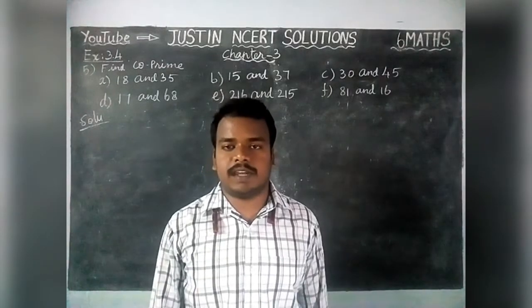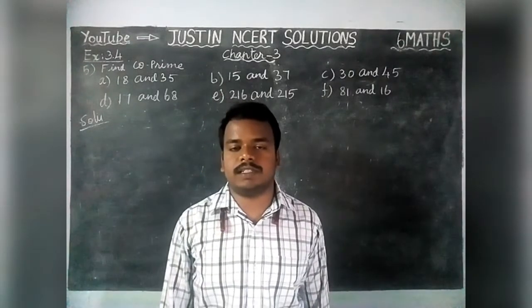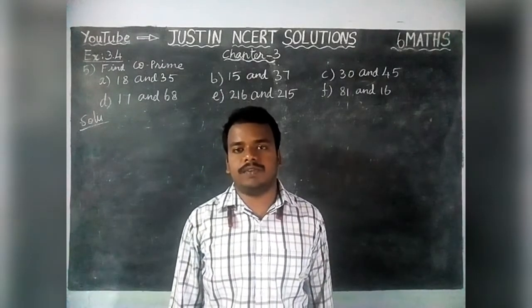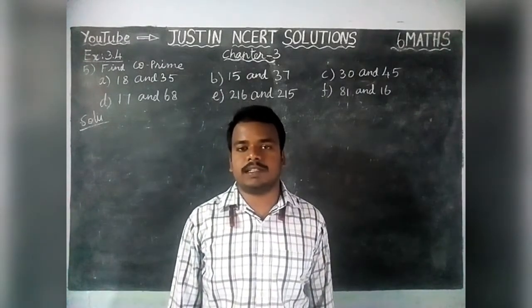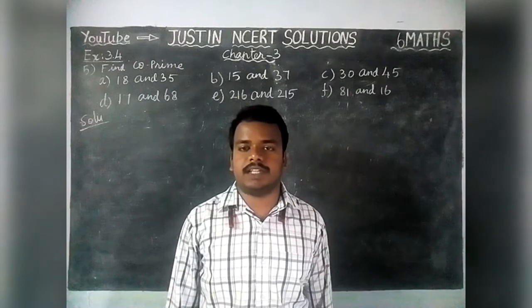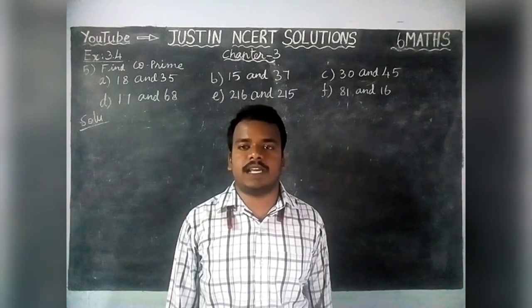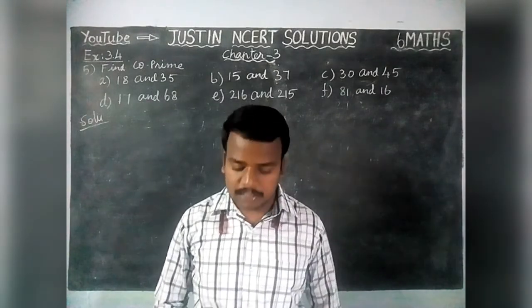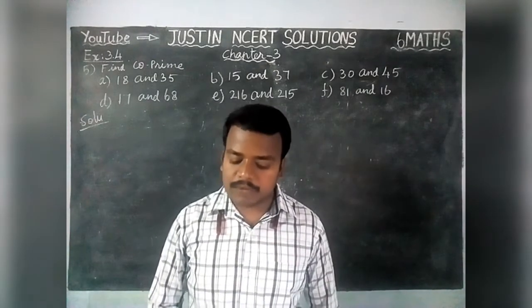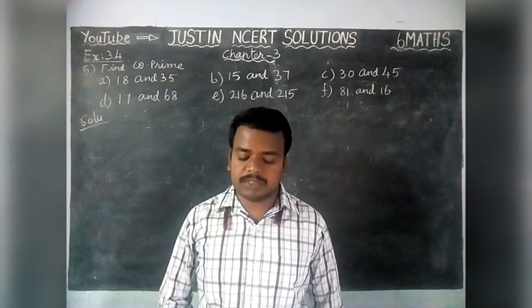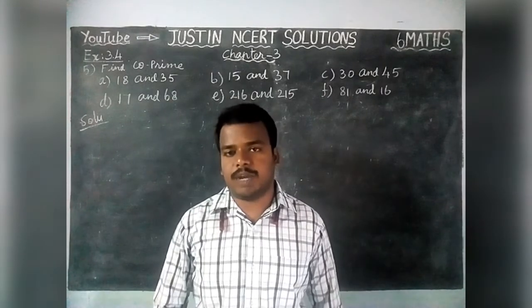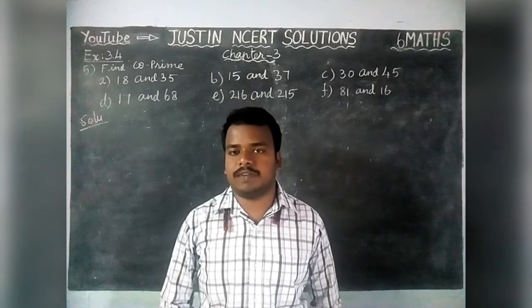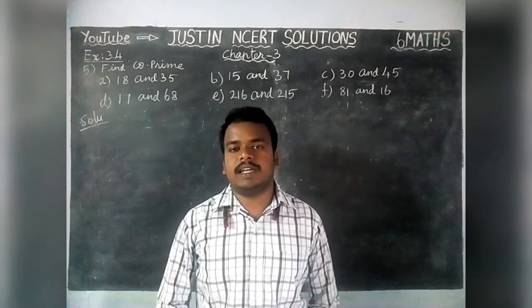Hi students, welcome to Destiny's NCRT Solutions. In this video, we are going to see Class 6 Maths Chapter 3, Exercise 3.4, 5th question: Which of the following numbers are co-prime numbers?